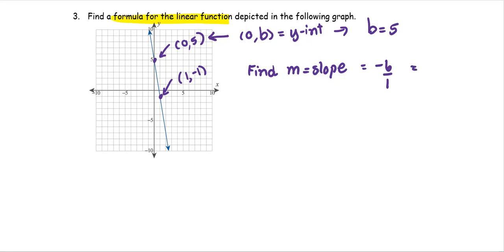For example, y2 minus y1, so negative 1 minus 5 divided by 1 minus 0, which turns out to be the same value, negative 6 over 1, or just negative 6.